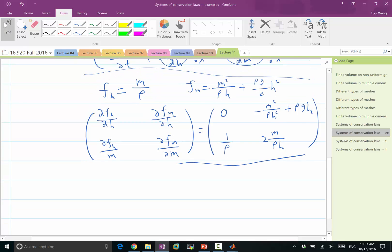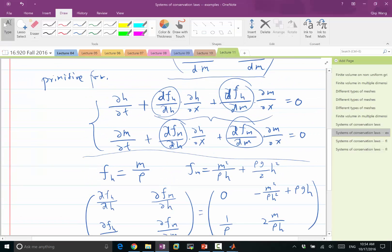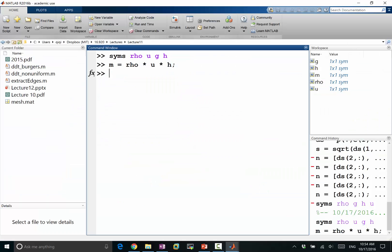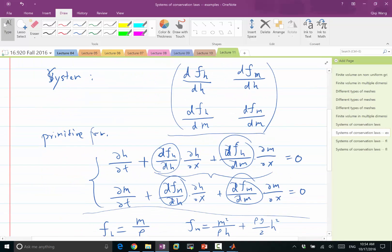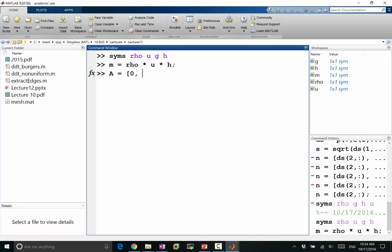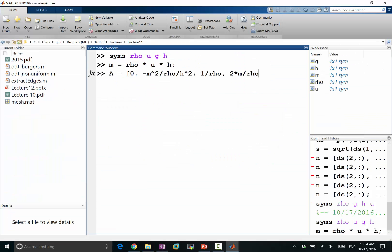So I'm going to define rho and U and G and H as symbolic variables. So first thing is to compute the momentum. My M is going to be equal to rho times U times H, right? So that's my definition of momentum. And my matrix A is going to be... It's zero. It's minus M squared divided by rho times H squared. And one over rho and the two times M divided by rho times H.